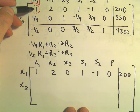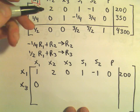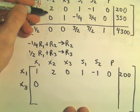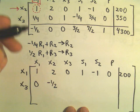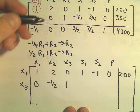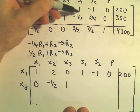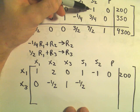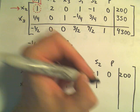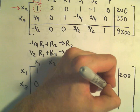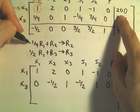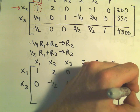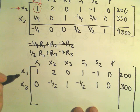Negative one-fourth times 1 plus one-fourth gives us 0. Negative one-fourth times 2 is negative one-half plus 0 will be negative one-half. We'll get 0 plus 1 which is 1. Negative one-fourth plus negative one-fourth will be negative two-fourths or negative one-half. Positive one-fourth plus three-fourths gives us 1. We get 0, and negative one-fourth times 200 is negative 50, plus 350 is positive 300.